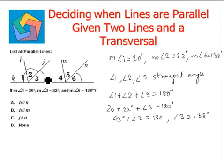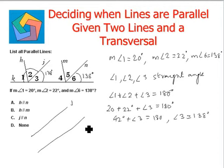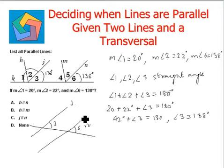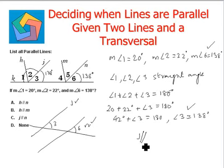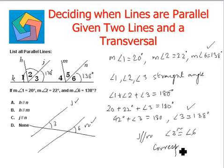Now angle 3 is 138 degrees, and it was given that angle 6 is also 138 degrees. Looking at lines J and N cut by transversal K, angles 3 and 6 are corresponding angles. Since they are congruent, the two lines J and N are parallel to each other. So J is parallel to N because angle 3 is congruent to angle 6, which are corresponding angles. This can be seen in option C.